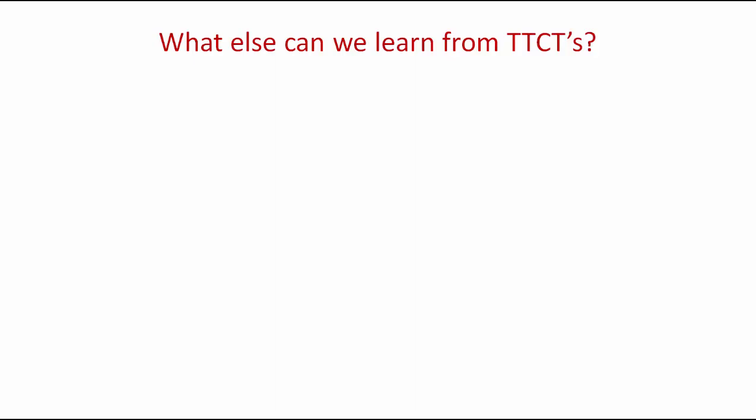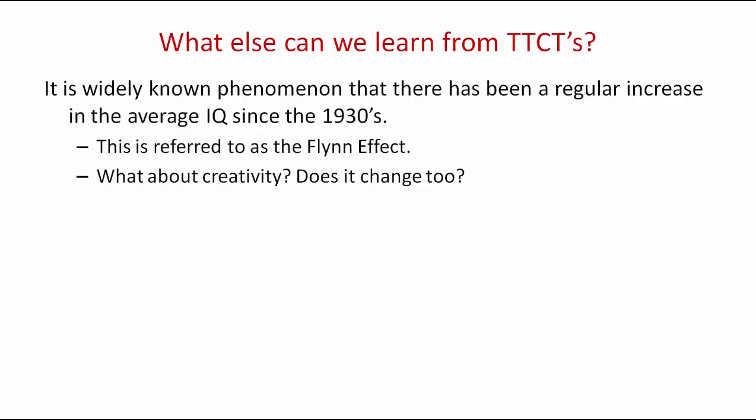Lastly, we may consider what else can we actually learn from the Torrance Test of Creative Thinking. It can actually be quite a lot, especially if we compare this to how we look at intelligence quotient results. It is a widely known phenomenon that there has been a regular increase in the average IQ of people all around the world since the 1930s. This is commonly referred to as the Flynn effect, named after the person who documented this effect. So what about creativity — how has creativity changed in relation to intelligence quotient over time?